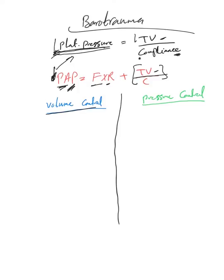So in volume control, because this is a flow target, the only way to lower the proximal airway pressure is by lowering the flow rate, which we can do. So lowering flow rate or by decreasing tidal volume.